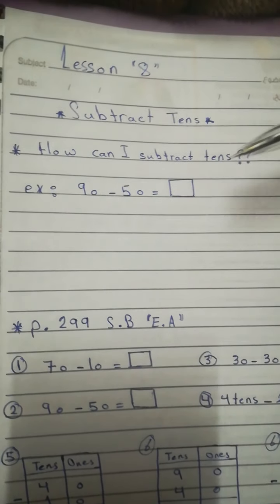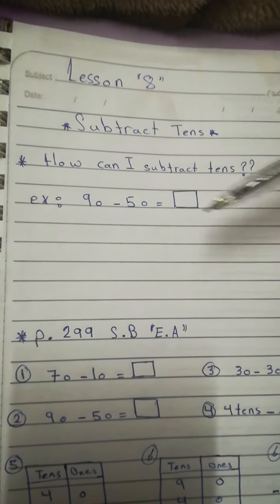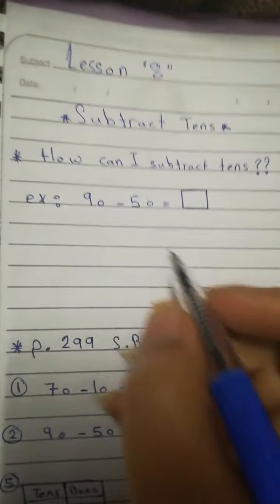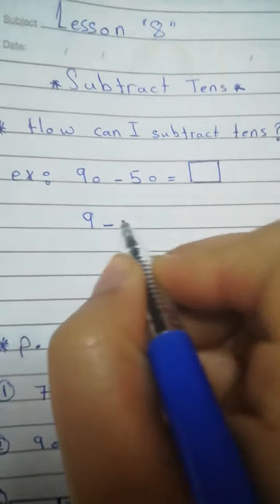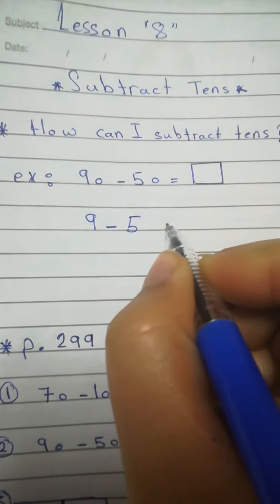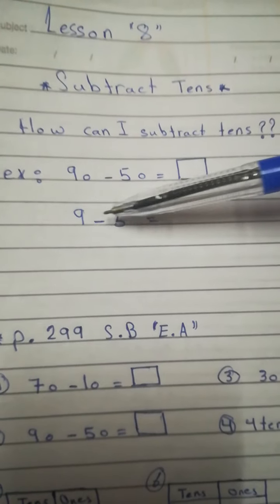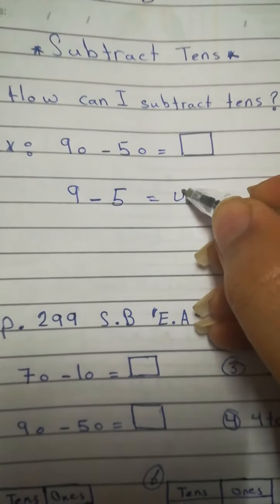Look at the example that we have, 90 minus 50. In order to know what is 90 minus 50, let us write, what if it is 9 minus 5? Okay? Now, we know that 9 minus 5 equals what? Equals 4, right?